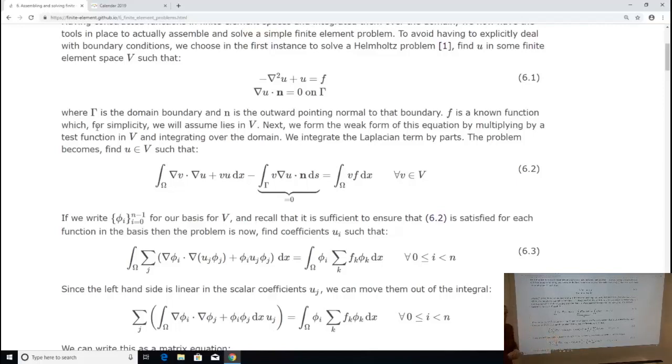If you had inhomogeneous Neumann boundary conditions, so a Neumann boundary condition where the right-hand side would not 0, what you would get is an integral here, and the integral wouldn't have any u in it. So that would turn up as a forcing term on the right-hand side. So in fact, morally, all boundary conditions are homogeneous because all inhomogeneous boundary conditions just show up as a different forcing term.